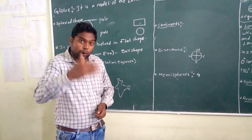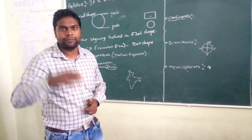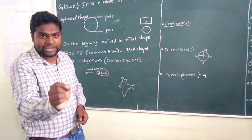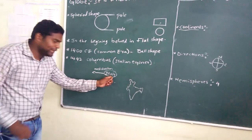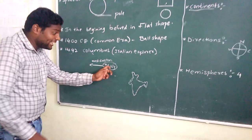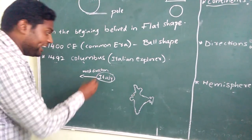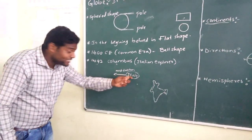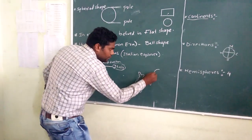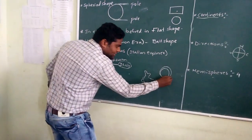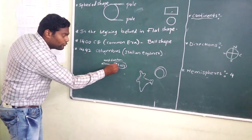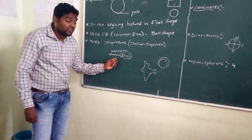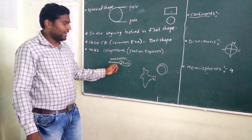Christopher Columbus was an Italian explorer. He thought that earth is in ball shape, so if you move from one direction you may come from the other direction. He believed earth is in round shape and he tried to travel from one direction — his intention was to discover a new sea road to India. So Italy would be here, India would be here — Italy is on the east direction but he travelled towards west.